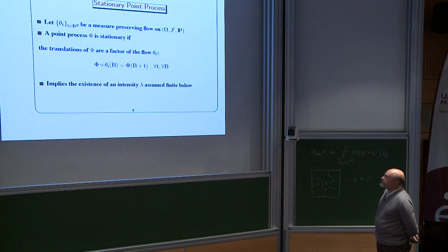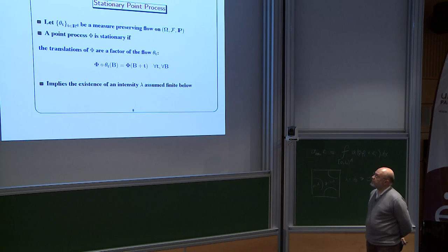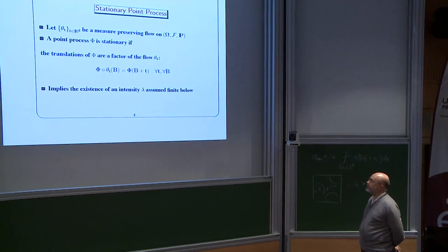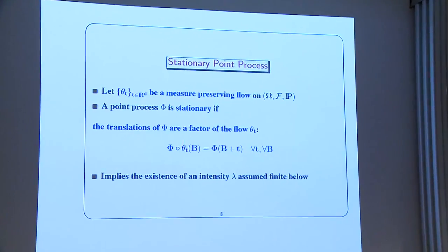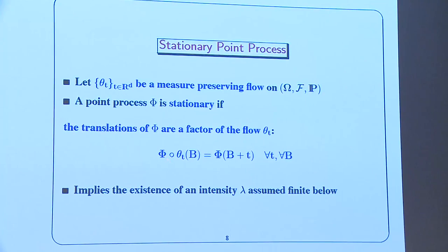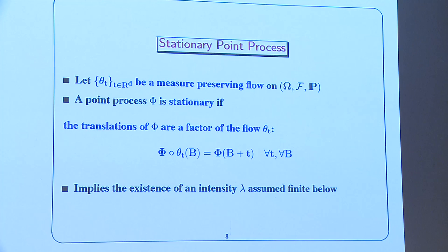What is a stationary point process? I equip the probability space with a flow — an action of R^d — such that if I shift omega by t and look at the values the point process phi takes on a set B, this equals phi of omega on the set B translated by t.